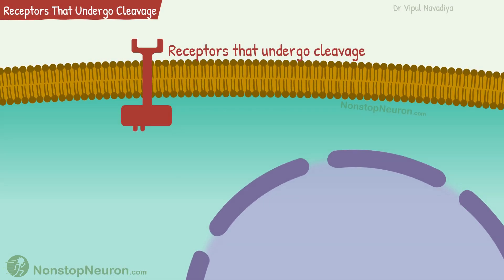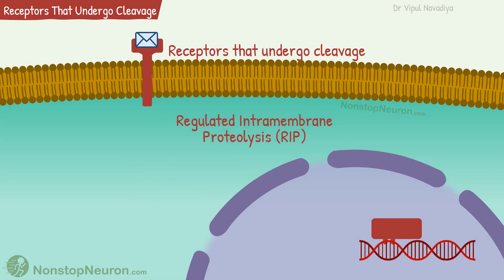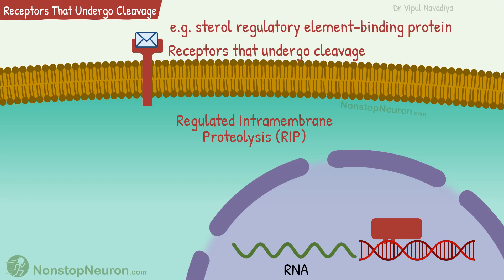Finally, receptors that undergo cleavage. They are not typical receptors but they work like receptors. Upon ligand binding, they undergo regulated intramembrane proteolysis. The released cytoplasmic fragments go to the nucleus and regulate gene expression. For example, sterol regulatory element binding proteins found on the endoplasmic reticulum are of this type.